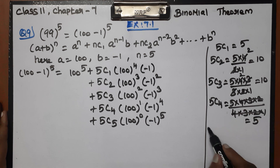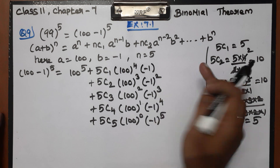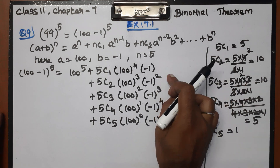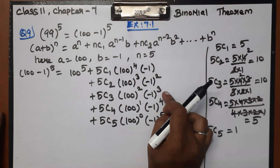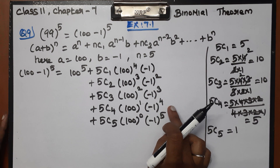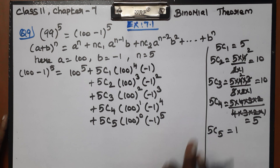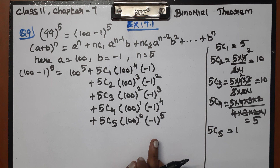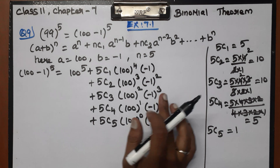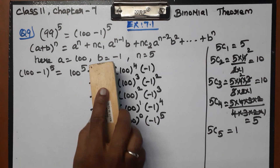Now we simplify: minus 1 squared is 1, minus 1 cubed is minus 1, minus 1 power 4 is 1, minus 1 power 5 is minus 1. Now we will substitute these values.